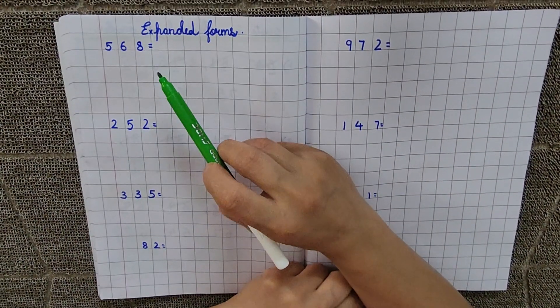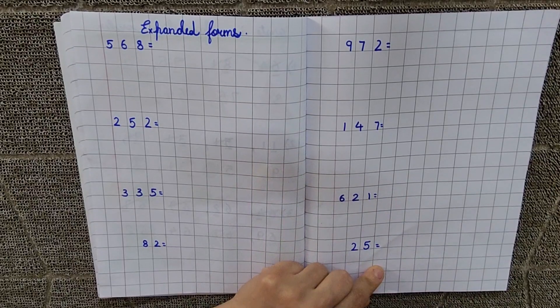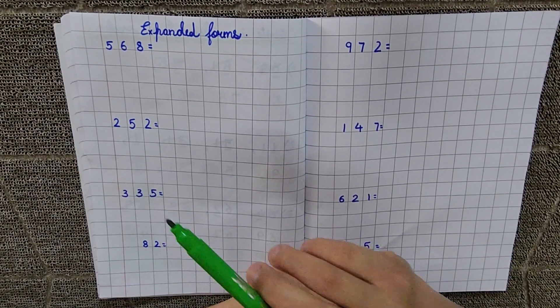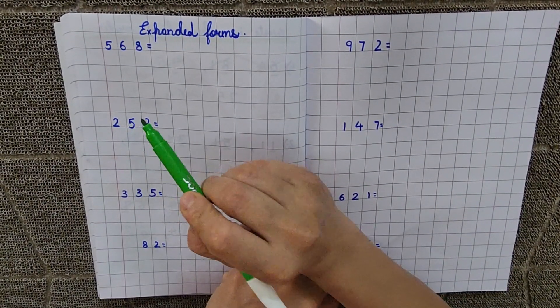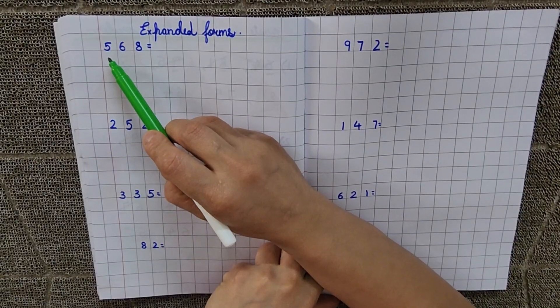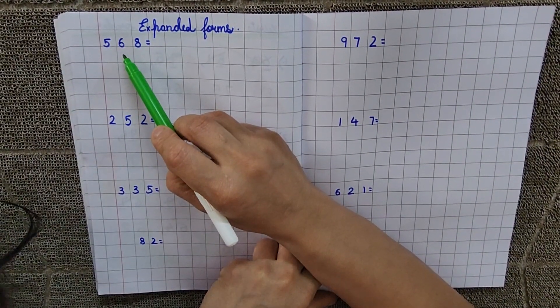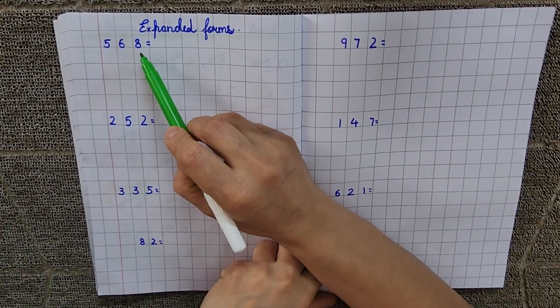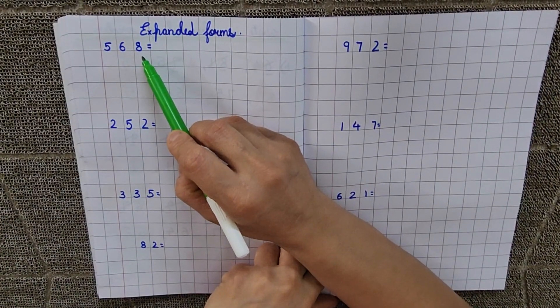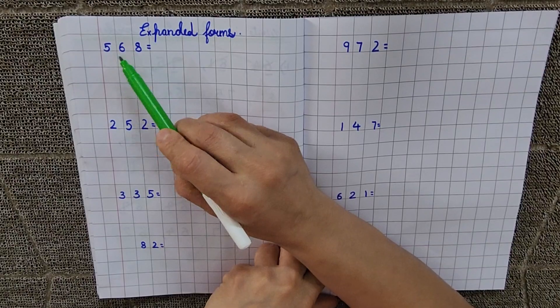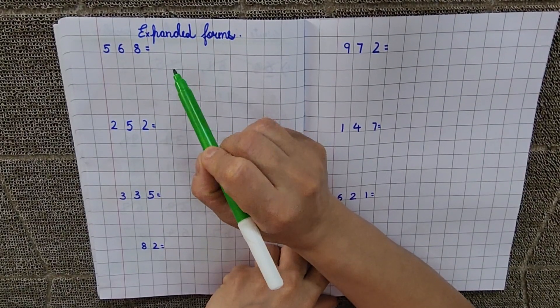Okay, before starting with this concept, let's recapitulate the place values, right? What is the place value of 5? 100's, 6's 10's, 8's 1's. So hume isse expand karna hai by writing their place values, right? Okay, so this is 568.